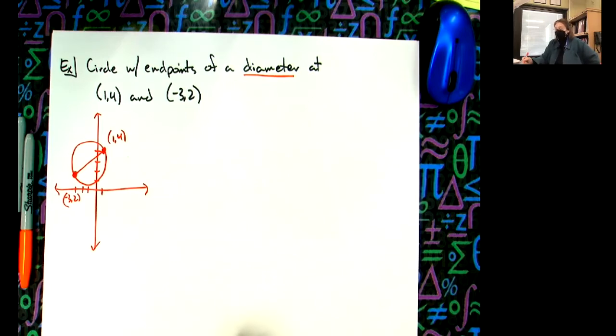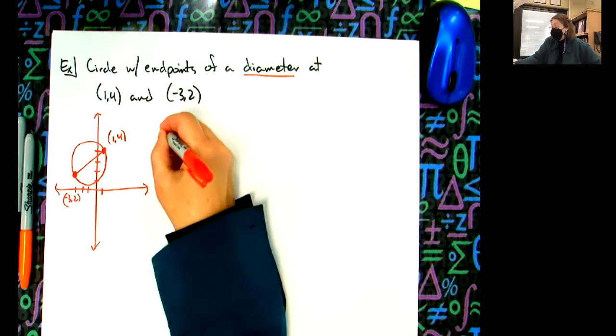If I know the endpoints of that line segment and I know that that's the diameter of the circle, can I find my center? Right, midpoint formula. Midpoint formula.